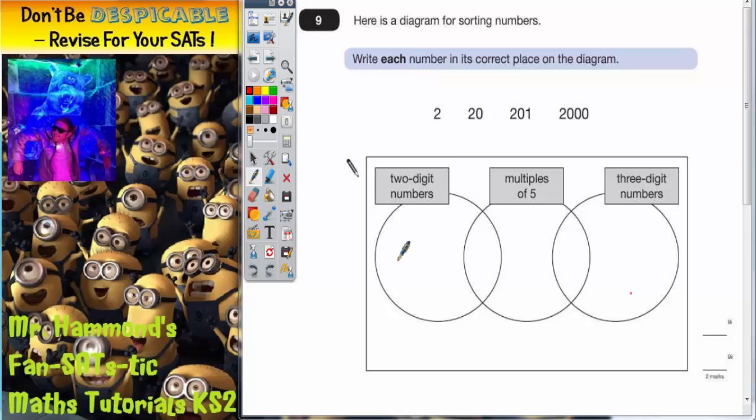If a number doesn't fit into any of those 3 headings then it's got to go in the space outside the circles, in other words in any of this space round here. Now the easiest thing to do here is just take each number in turn.